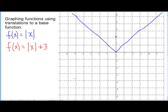So the base function would change in this case by moving up to 3 and the slopes of the sides would still be the same as we had in the base function. So that would be the graph here of f of absolute value of x plus 3.